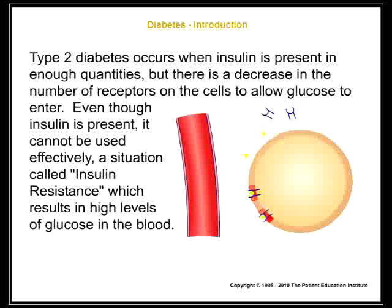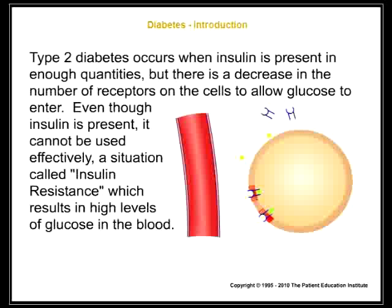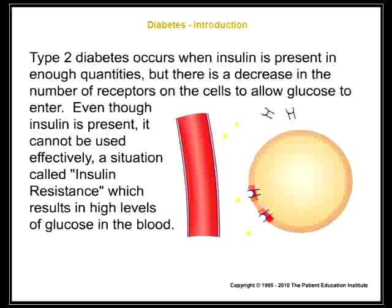Type 2 diabetes occurs when insulin is present in enough quantities, but there is a decrease in the number of receptors on the cells to allow glucose to enter. Even though insulin is present, it cannot be used effectively — a situation called insulin resistance, which results in high levels of glucose in the blood.